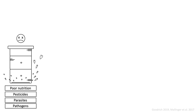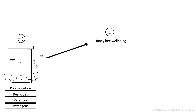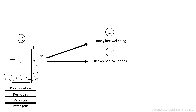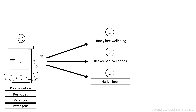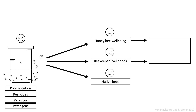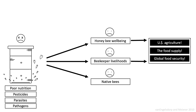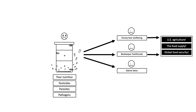Next, we reference some of the social, economic, and ecological implications of poor honeybee health. We talk about the ways in which this problem negatively affects honeybee well-being and beekeeper livelihoods. Sometimes we also mention that the spread of honeybee pathogens could spill over to native bees and other insects. Taking this one step further, we connect the importance of honeybee well-being and beekeeper livelihoods to our agricultural system, the food supply, and even global food security.